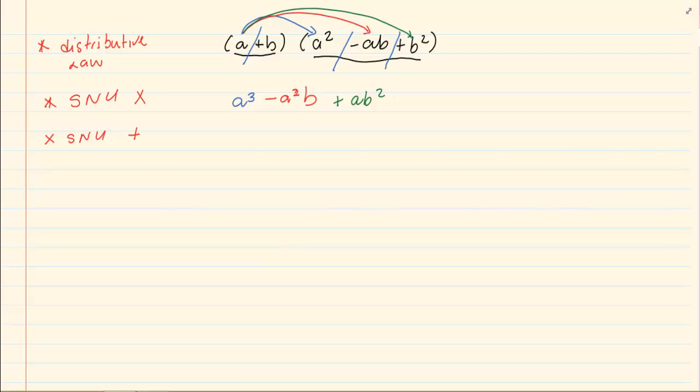Now we do the same thing with the b. We are going to say b times a squared, which is equal to positive a squared b. Then we are going to say b times negative ab, which is negative ab squared. And then the last one, b times positive b squared, which will equal to positive b cubed.